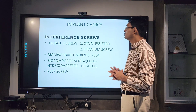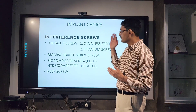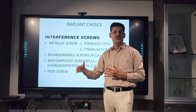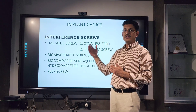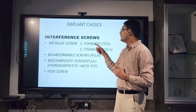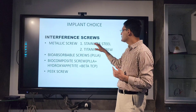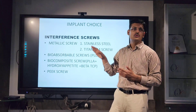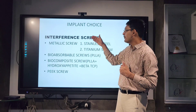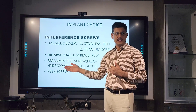Now regarding implants — there are many available, and you can use interference screws. There are many generations of interference screws. The first basic screw was metallic — initially stainless steel was used. The problem with SS screws is MRI non-compatibility, so stainless steel is now out. If you want to use a metal screw, you should use a titanium screw because they are MRI compatible.